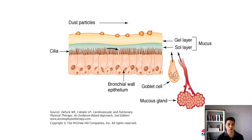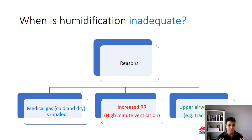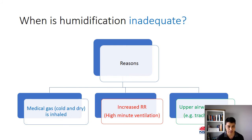Let's have a look at the common reasons we see inadequate humidification in our patients. Number one is medical gas, which is very cold and dry. Another situation is when a patient is breathing in and out large amounts of air — meaning a bigger tidal volume or a consistently high respiratory rate. Because of the large amount of air going in and out, the mucosa in the nose and upper respiratory tract cannot cope with providing adequate humidification. Another example is where the upper airway is bypassed, such as with tracheostomies or laryngectomies.